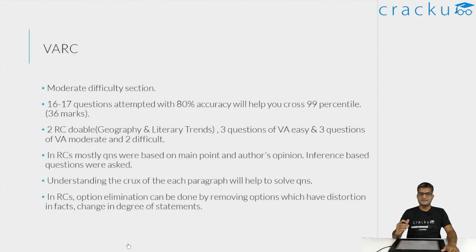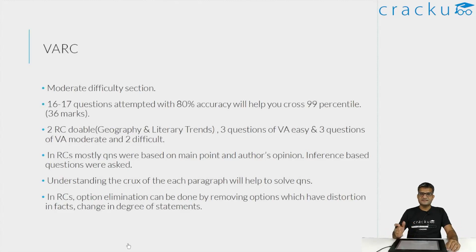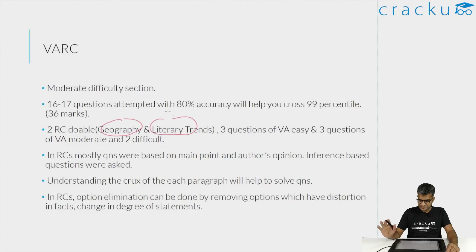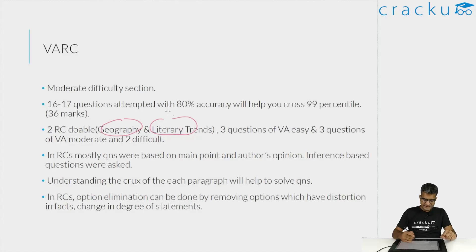The percentile I think is slightly lesser than what I would expect. But again, even though the RCs seemed easy — like the first and fourth RC — they were not as easy as they looked; there were definitely some tricks involved. However, the verbal section overall was not very difficult. There are two doable RCs: geography and literary trends regarding opera. Verbal non-RC questions — at least three are easy: two para insertions and one para jumble. Three are difficult to moderate: out of context was slightly difficult and para summaries were moderate.